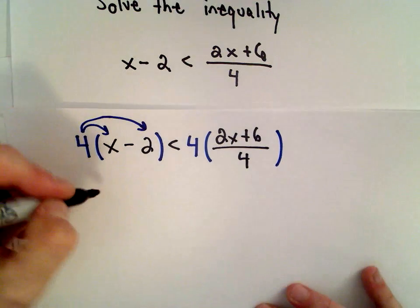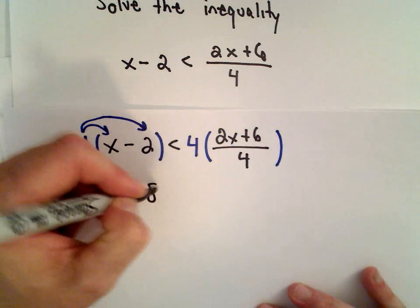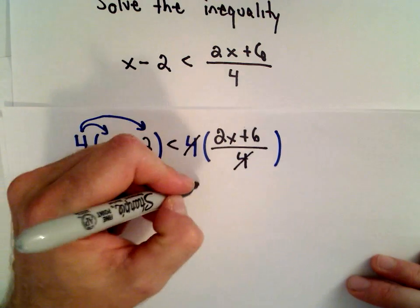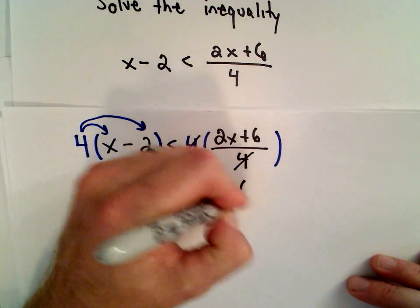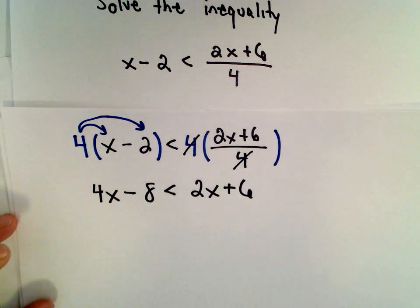So 4 times x will be 4x, 4 times negative 2 will be negative 8. On the right side, the 4s will cancel out and we'll be left with 2x plus 6. Now I've gotten rid of the fraction.